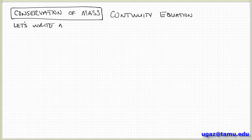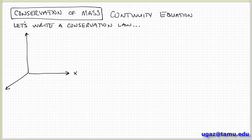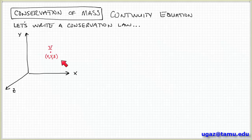Here we're going to pick up where we left off and apply these definitions and this language to actually write a conservation law. The starting point is a Cartesian coordinate system with axes x, y, and z. In this coordinate system I can locate a point at some position x, y, z. At this point there's some velocity vector v — a flow with some velocity described also with x, y, and z components.